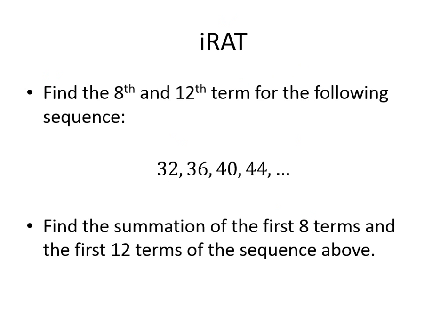For your IRAP, you need to find the 8th and the 12th term of the sequence 32, 36, 40, 44, and it keeps going. Use your explicit formula. Then find the sum — the series — of the first 8 and the first 12 terms of that sequence. Use the AN formula to find the terms, then use the SN formula for the sums. That is arithmetic sequences and series.